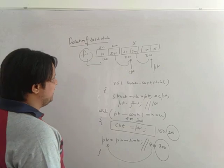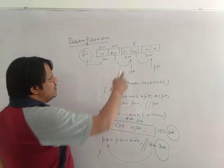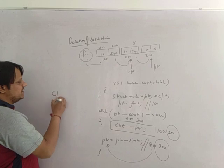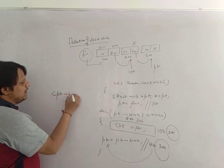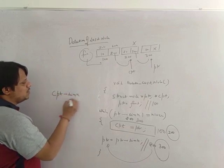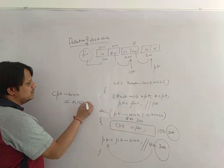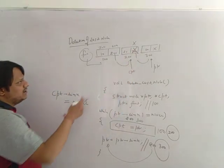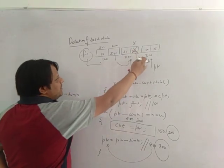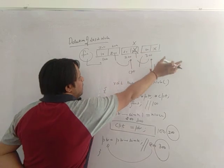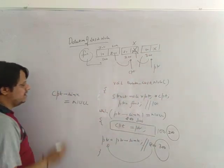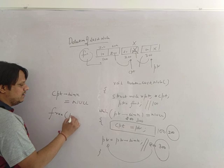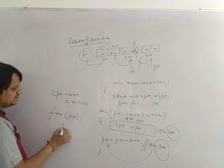Now it becomes very easy to write the code. We make the link part of cpt null: write cpt arrow link equals null. So the connection to the last node breaks and it becomes a separate identity. Then write free(ptr) to delete it. That's it.